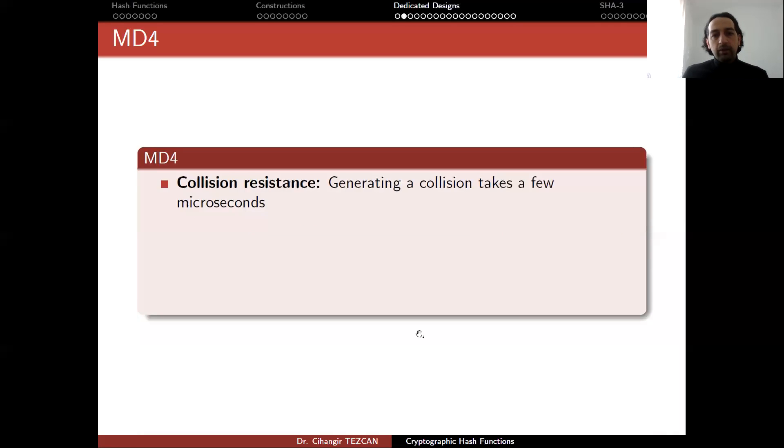So very simple design, easy to implement. But the problem is that we know how to find collisions for this algorithm. Actually, generating a collision takes a few microseconds. And to the best of our knowledge, the best preimage attack requires 2 to the 95 operations. But of course, since this is an old algorithm, maybe with today's knowledge, if cryptographers analyze it more, we can get better attacks. Or maybe intelligence agencies have better attacks already. But this is the best published so far.